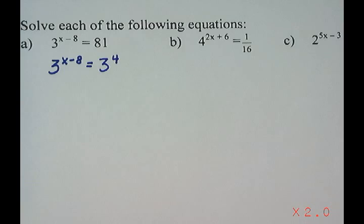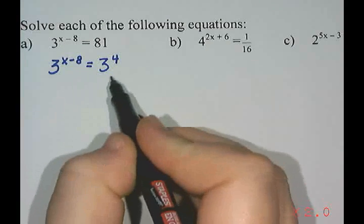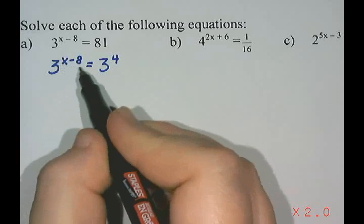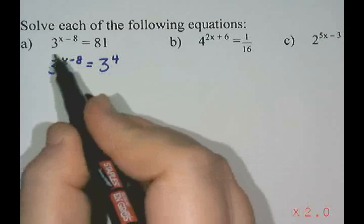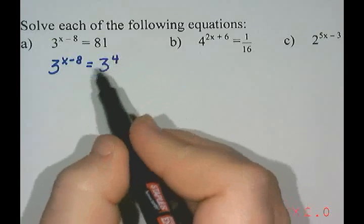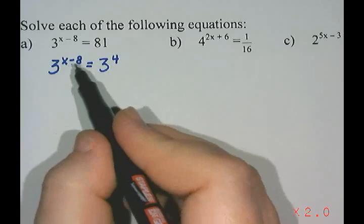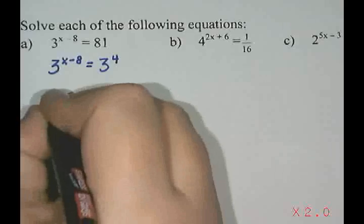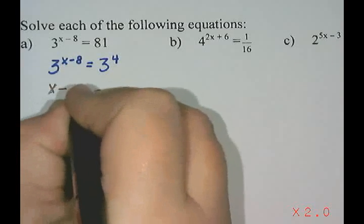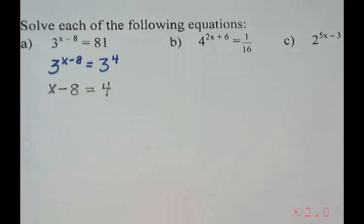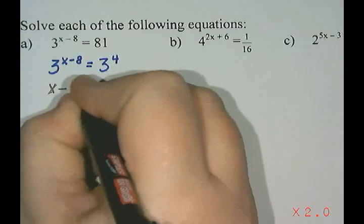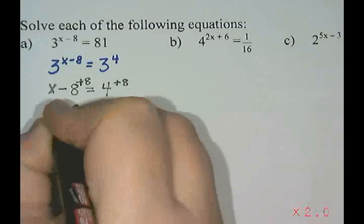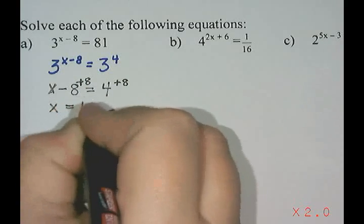From here, since the bases are equal — 3 equals 3 — whatever x minus 8 is, it has to equal 4, because this should be 3 to the 4 equals 3 to the 4. When they're equal and have the same base, the exponents must also be equal. So x minus 8 equals 4. To move the negative 8 to the other side, we add 8, giving x equals 12.